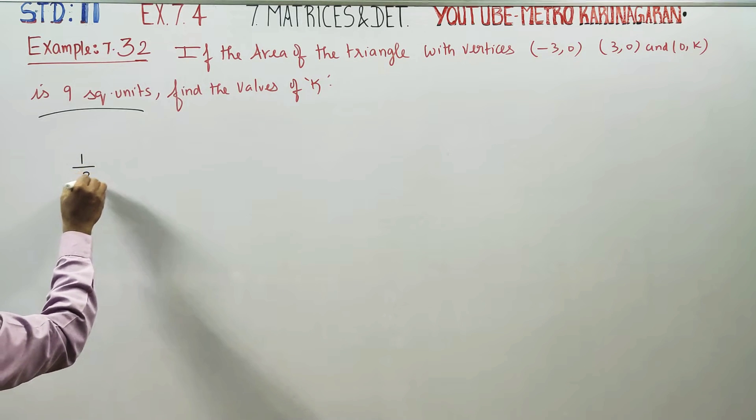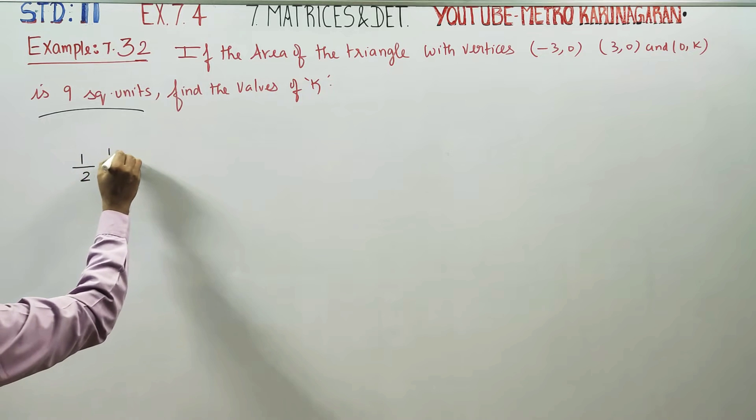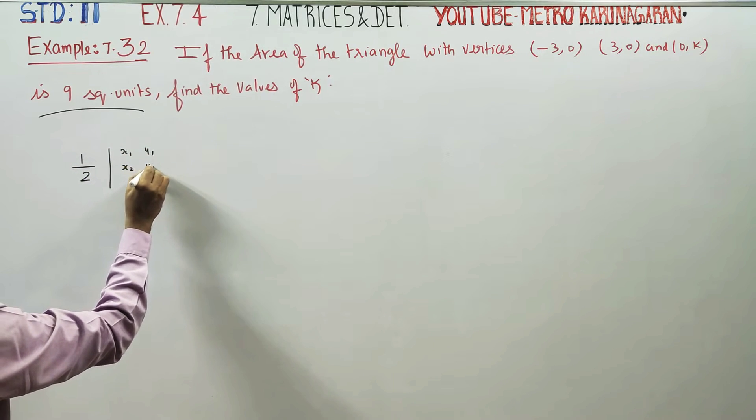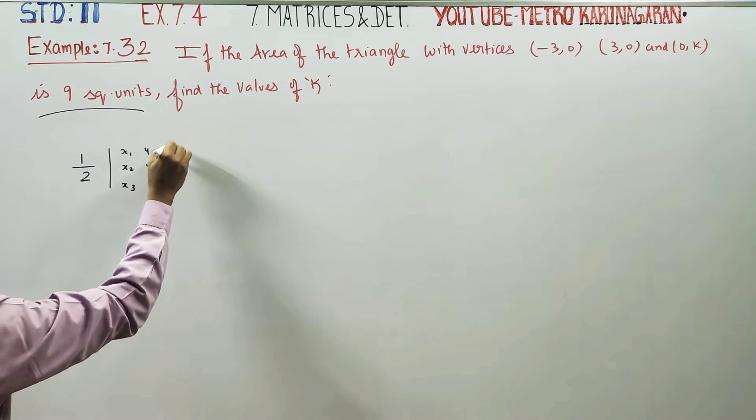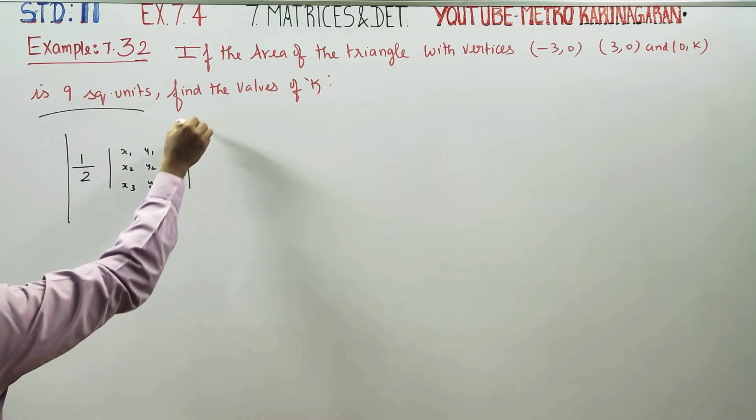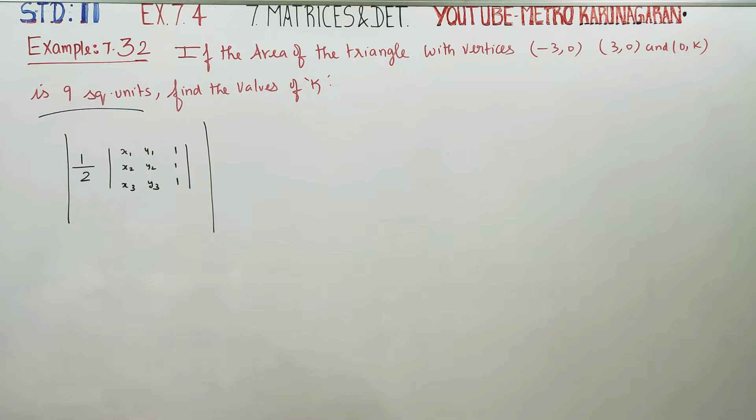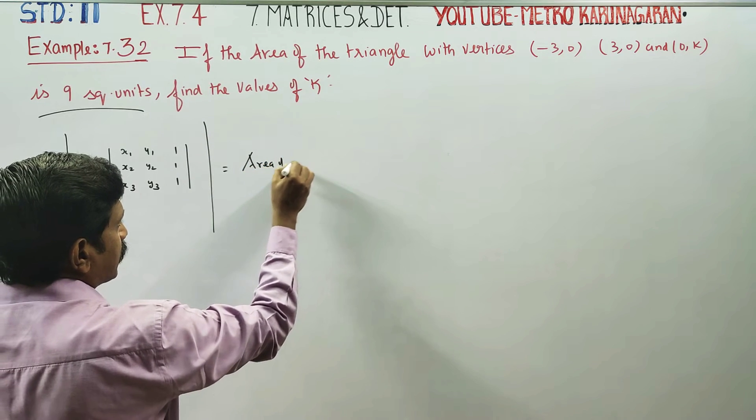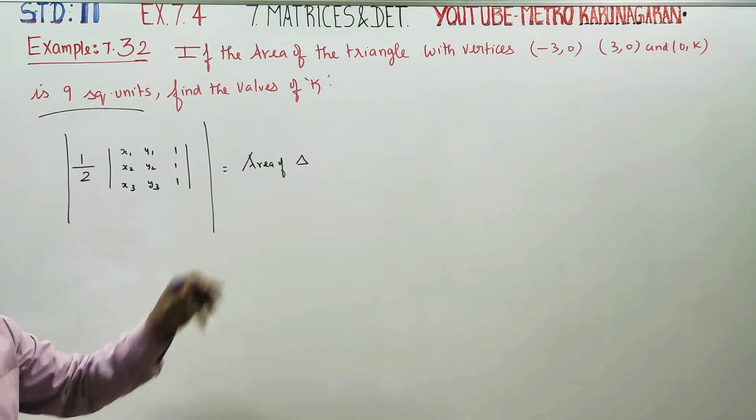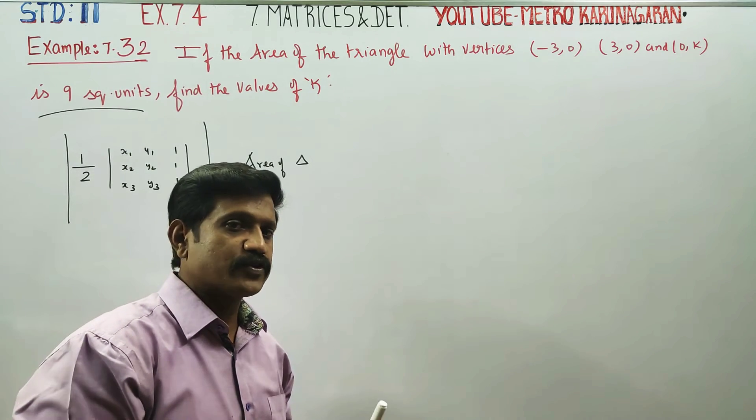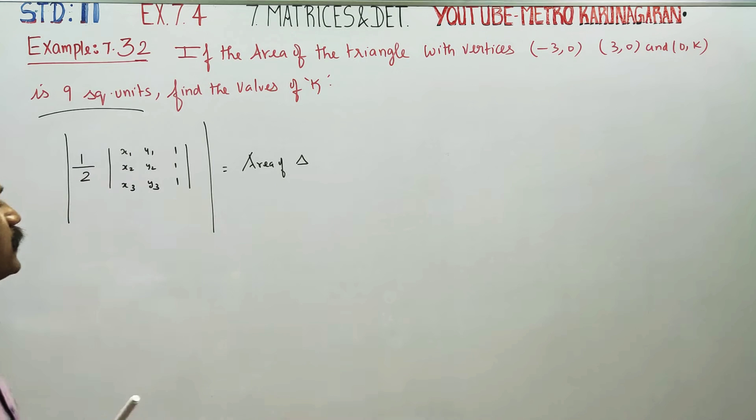The formula is 1 by 2, determinant of x1, y1, x2, y2, x3, y3, 1, 1, 1. This is the absolute value. The absolute value is the area of the triangle. The determinant method is the area of the triangle. If we go to coordinate geometry, this is the area of the triangle.